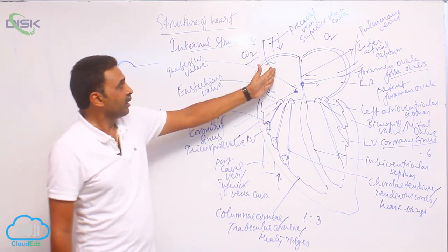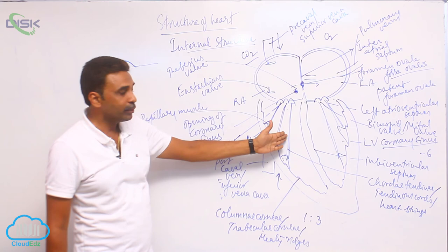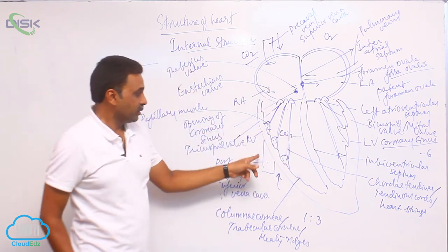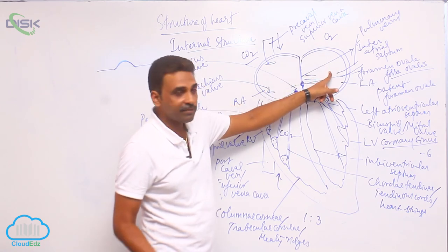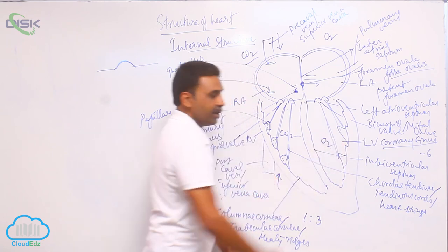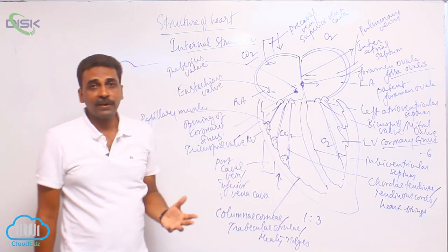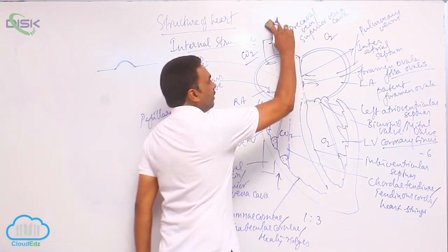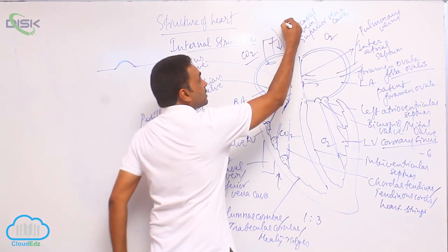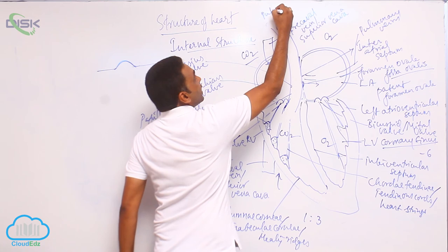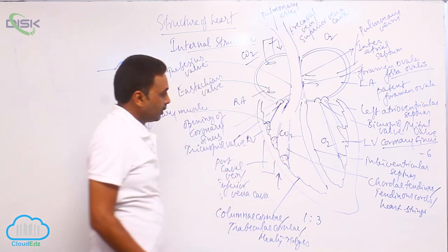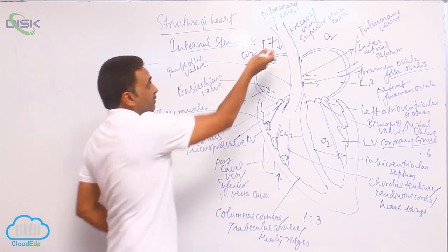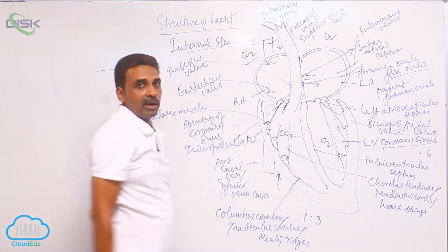The deoxygenated blood from the right atrium comes to the right ventricle when the tricuspid valve is open. Likewise, oxygenated blood from the left atrium comes into the left ventricle. To carry blood outside, there are two major blood vessels. From the right ventricle, there is the pulmonary arch, which takes deoxygenated blood to the lungs, dividing into two after exiting. At its base there are three semilunar valves.